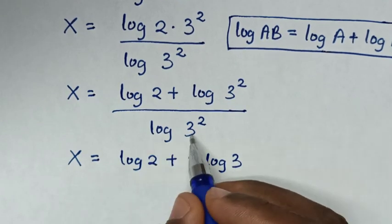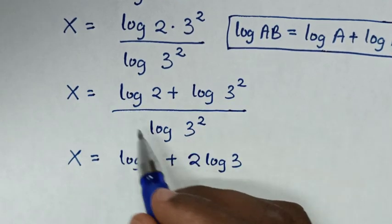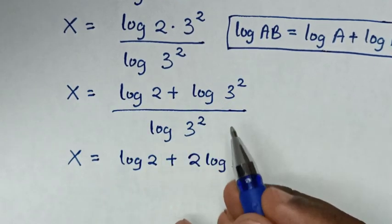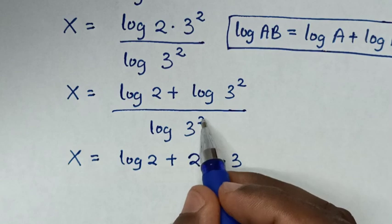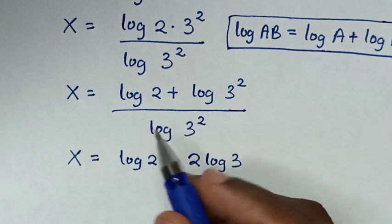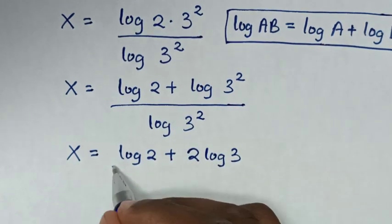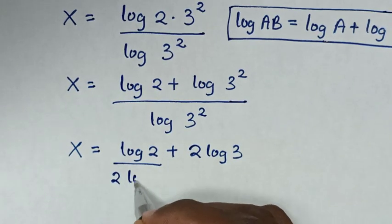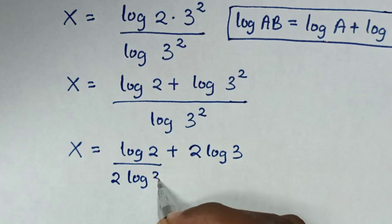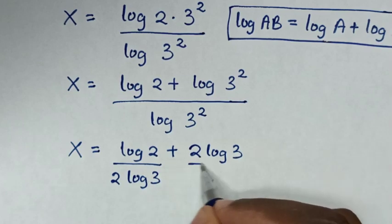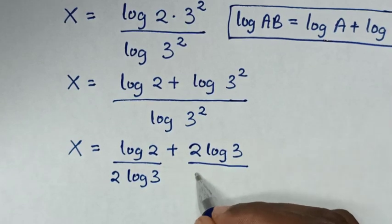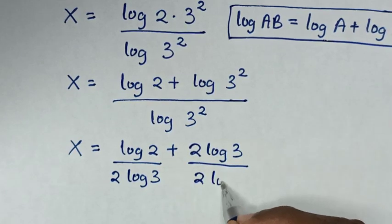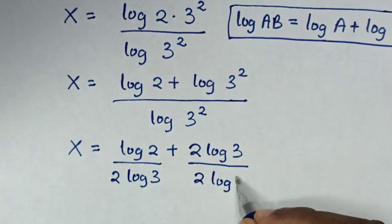Then in the denominator, we'll apply the same rule to this part, so this power of 2 will move to the front, giving us 2 log of 3 in the denominator.